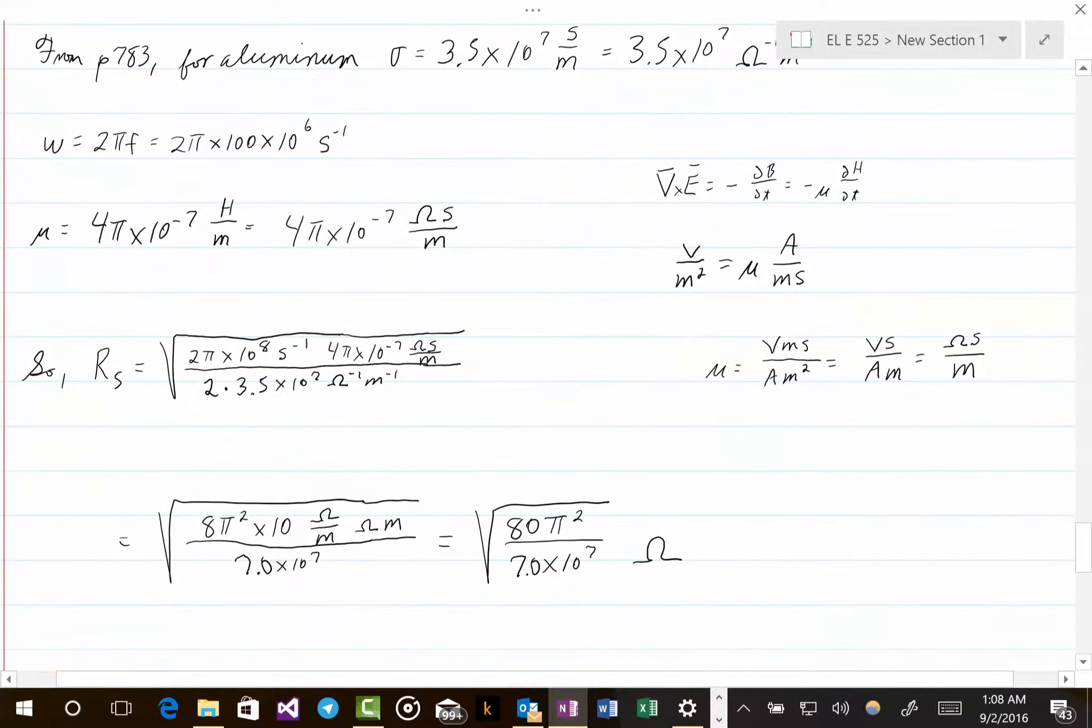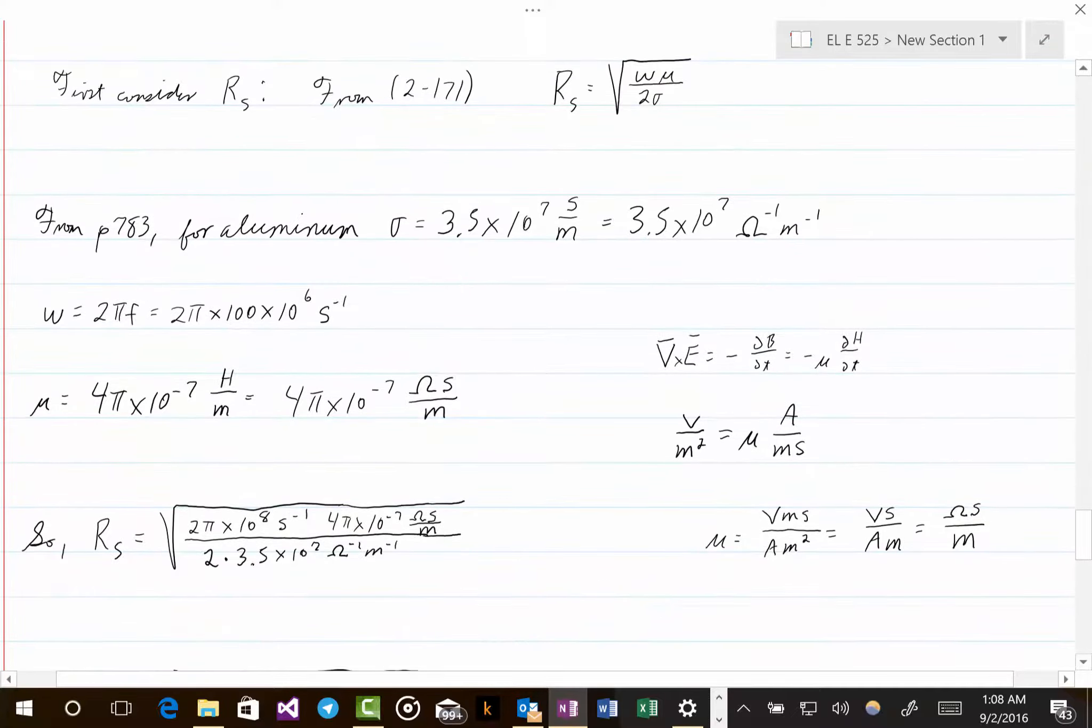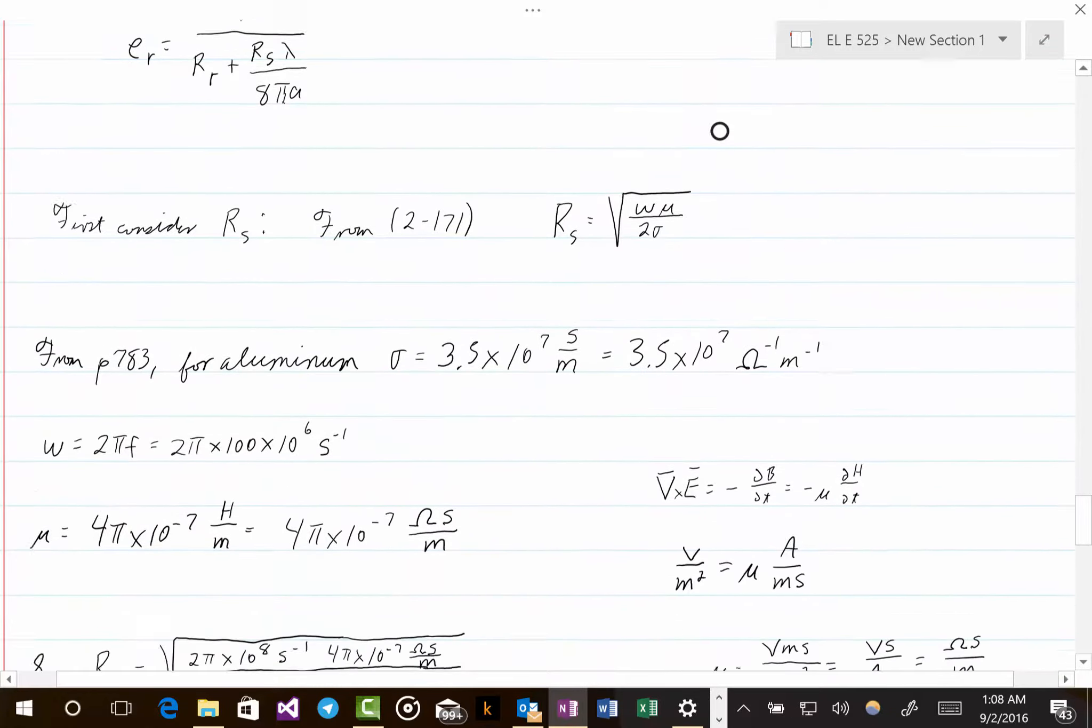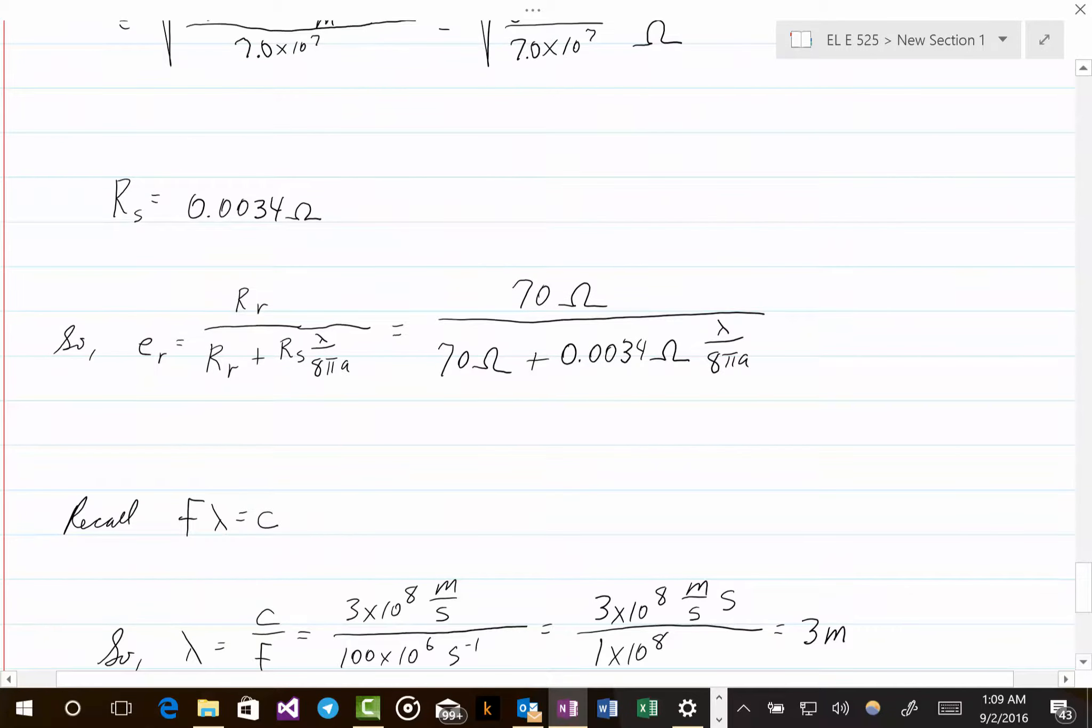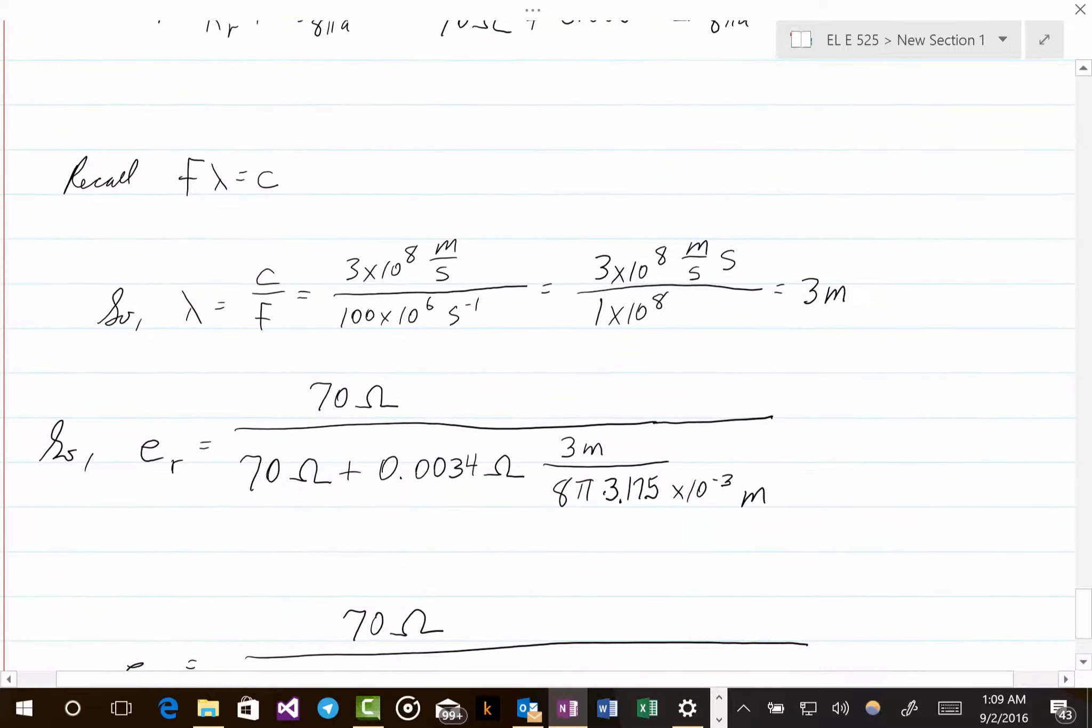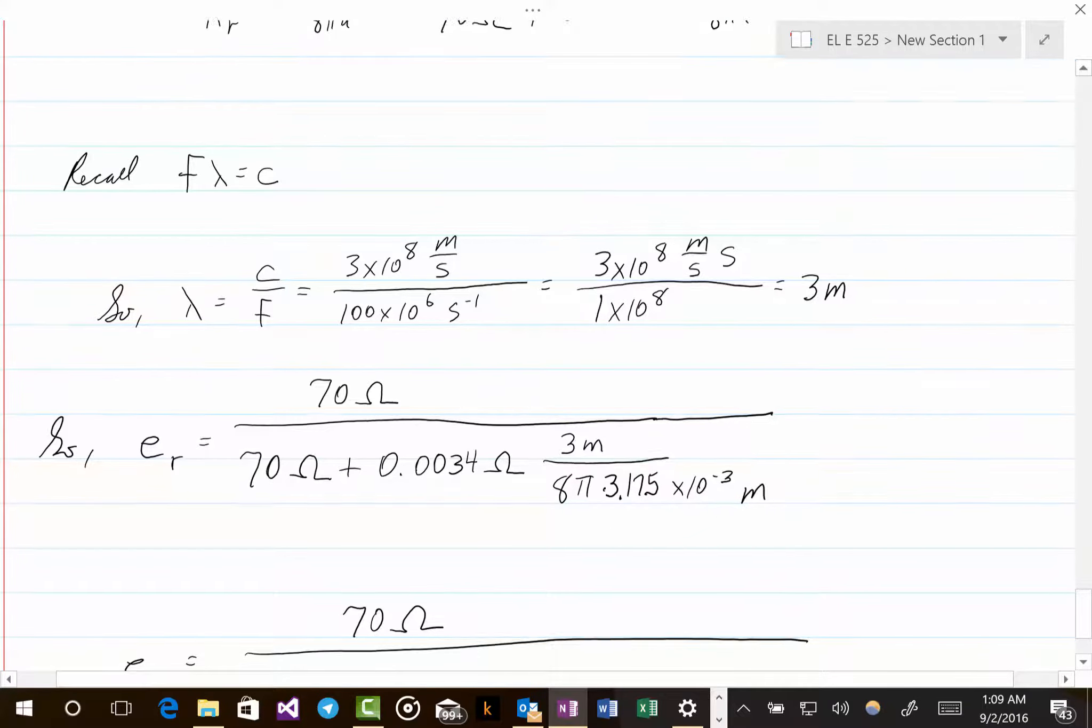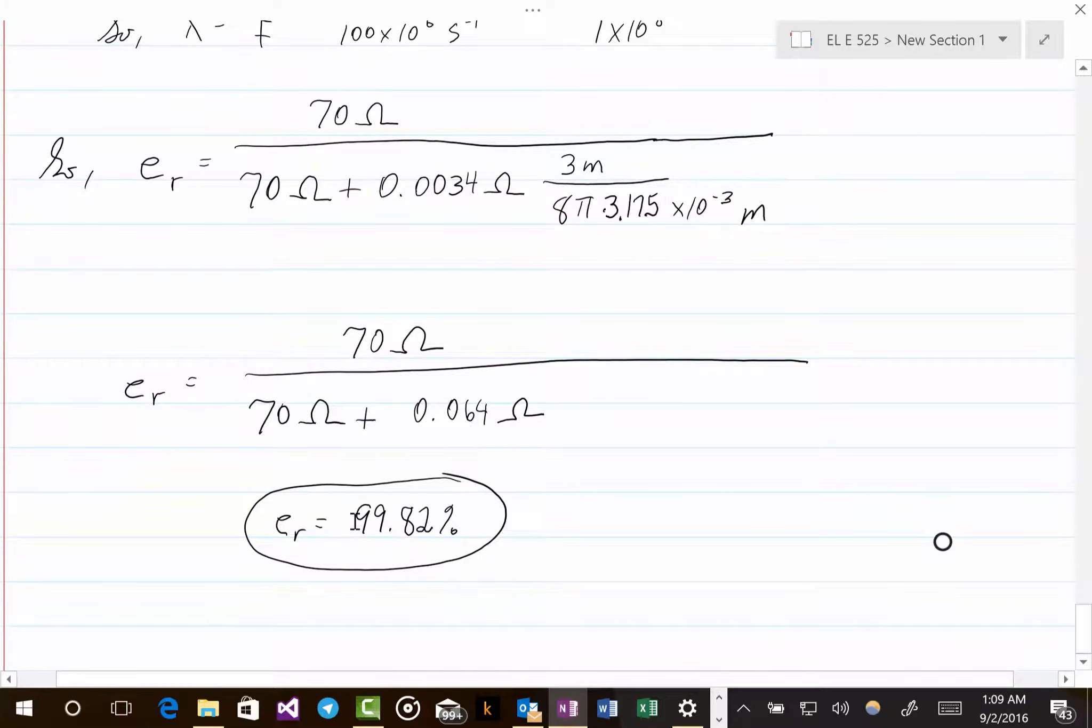But here, the calculation, you can see down here, right here, we have used the correct value for A now. And so, the correct final value for the radiation efficiency is 99.82%.